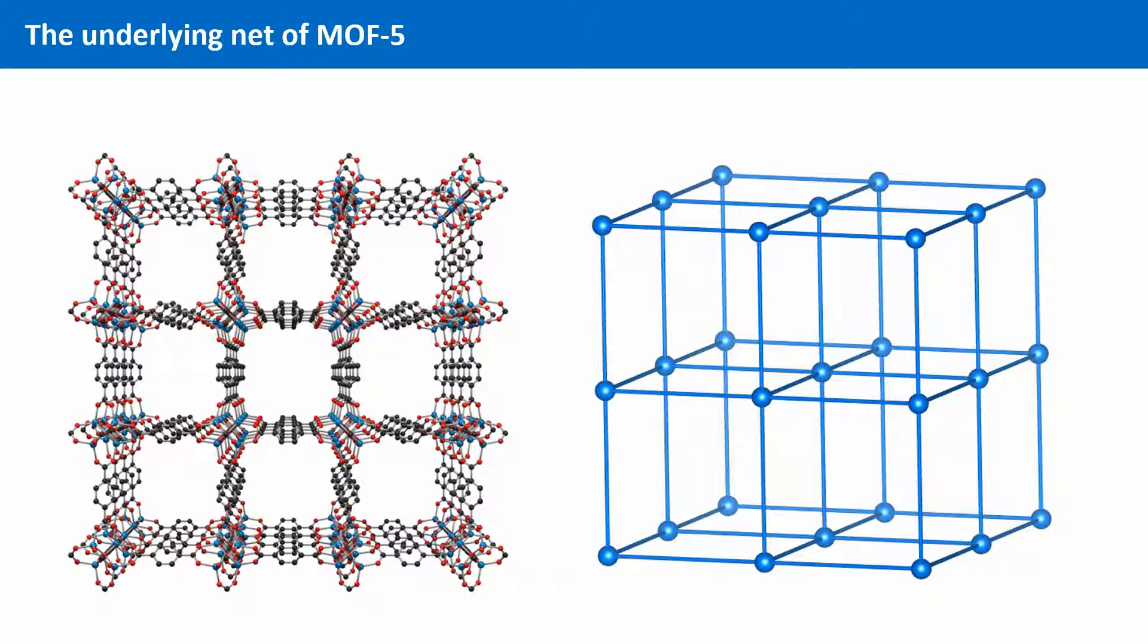The structure of MOF-5 cannot be simplified any further. All the inorganic SBUs are contracted to six connecting points. The organic SBUs are only two connecting and not branching points. Therefore they are condensed to simple lines.